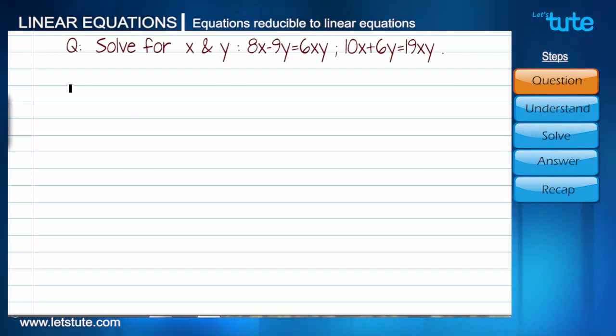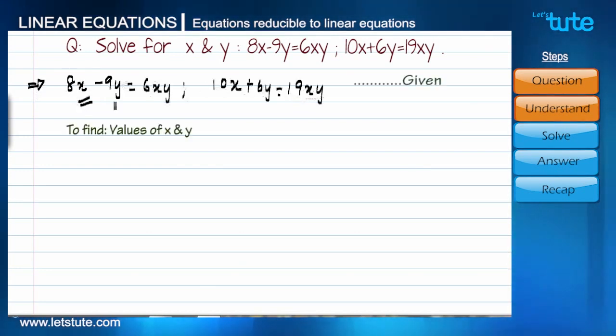Let's form proper steps for solving this problem. Start with step number 1. Let's understand what is given in the question and what we need to find. We are given two equations and we need to find the values of x and y. Let's give numbers to the equations, equation number 1 and equation number 2. Looking at the equations, we can see that they are not linear equations.